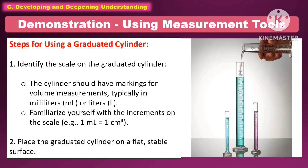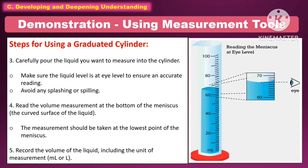The following are the steps for using a graduated cylinder. First, identify the scale on the cylinder — it should have markings in milliliters or liters, and familiarize yourself with the increments. Second, place the cylinder on a flat and stable surface. Third, carefully pour the liquid into the cylinder, keeping the liquid level at eye level to ensure accurate reading, and avoid splashing or spilling. Fourth, read the volume at the bottom of the meniscus — the curved surface of the liquid — at its lowest point. Finally, record the volume including the unit of measurement.